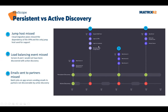Consider a jump host used by an external support team. Whenever there's an issue, they log in via VPN, power up the jump host, and connect to the system. This system might be started only once or twice a month, so traditional active discovery will never capture it. Persistent discovery will automatically detect that the jump host has been powered up and add or update it in the CMDB.